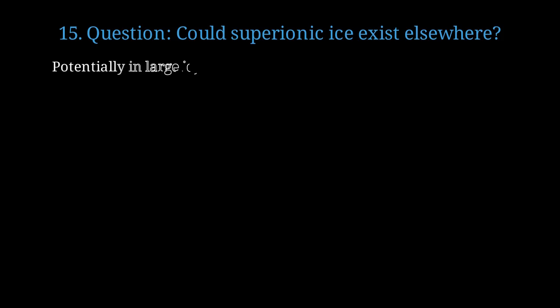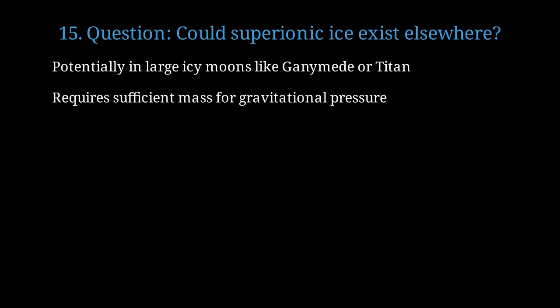An interesting question. Could superionic ice exist in other places besides ice giants? It might exist deep inside large icy moons like Ganymede or Titan, where pressures could reach necessary levels. The body needs sufficient mass to generate the gravitational pressure required, limiting it to large objects. Rough estimates suggest objects need more than 0.1 Earth masses to create these conditions in their interiors.